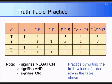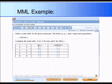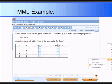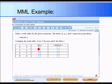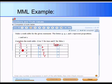Now let's look at an example from MyMathLab. Here is an example taken from your study plans: make a truth table for the given statement, where the letters P, Q, R, and S represent propositions. The statement is R and not S. First, we need to create the not S column by negating S. Looking at the S column, not S would be false, true, false, and true.